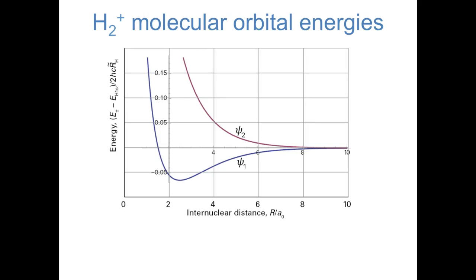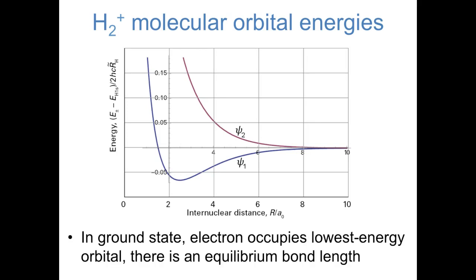We can plot the energies of the molecular orbitals psi 1 and psi 2 as a function of the distance between the two atoms. Notice that as the two atoms get very far apart, the energies of both molecular orbitals approach the energy of a hydrogen 1s orbital. This makes sense: if two atoms are very far apart, they're basically separate atoms and not a molecule. As the atoms are brought closer together, the energy of psi 2 is always higher than the energy of a hydrogen 1s orbital. But the energy of psi 1 gets lower for a while before getting higher once the atoms are brought very close together. In the ground state of H2+, the electron occupies psi 1, the lowest energy orbital. Notice that there's a minimum energy of psi 1, which means there's an equilibrium bond length—a particular separation between these two atoms that's most stable.